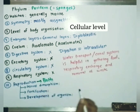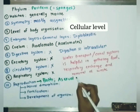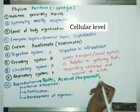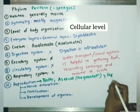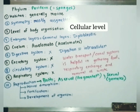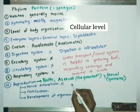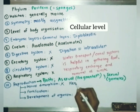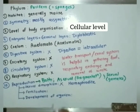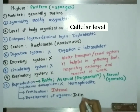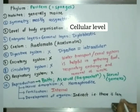Sponges show both asexual and sexual reproduction — asexual by fragmentation and sexual reproduction by formation of gametes. There is no sexual dimorphism, meaning sexes are not separate, so eggs and sperms are produced by the same individual; such individuals are called hermaphrodites. Fertilization is internal with indirect development of offspring, in which there is a larval stage — a stage morphologically distinct from the adult.